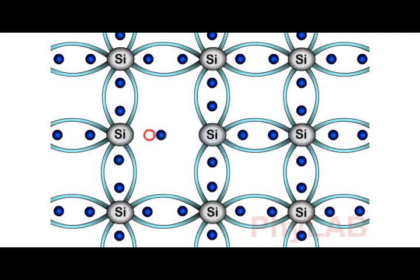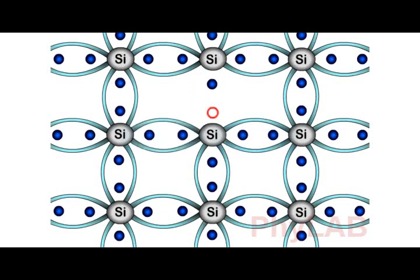Once the bond is broken, the electron becomes free to carry the current. We get a deficiency of an electron in the structure. Hence, there is an empty space formed which can also be referred to as a hole.